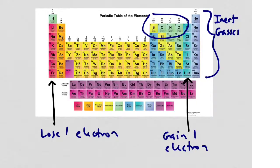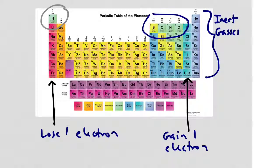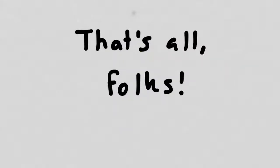Coming back to our periodic table: ionic compounds tend to form with elements on either extreme of the periodic table, and covalent bonds tend to form with elements in the middle. Hydrogen is interesting because it can do both. However, most of the time in biology we'll be discussing covalent bonding, because that's what atoms such as carbon, hydrogen, oxygen, nitrogen, phosphorus, and sulfur tend to do. Okay, so that's pretty much chemistry in a nutshell. Thanks for watching, everybody.